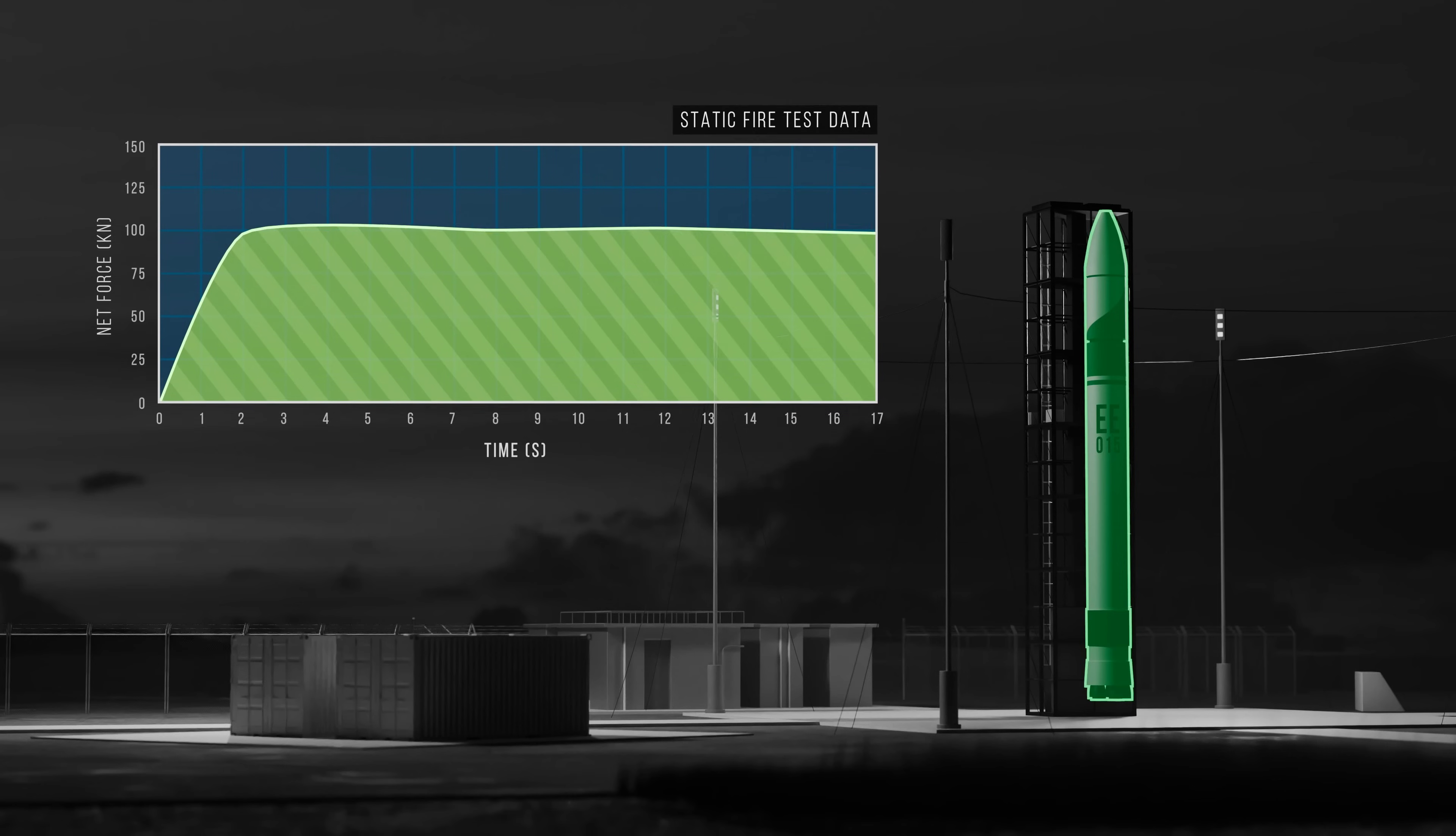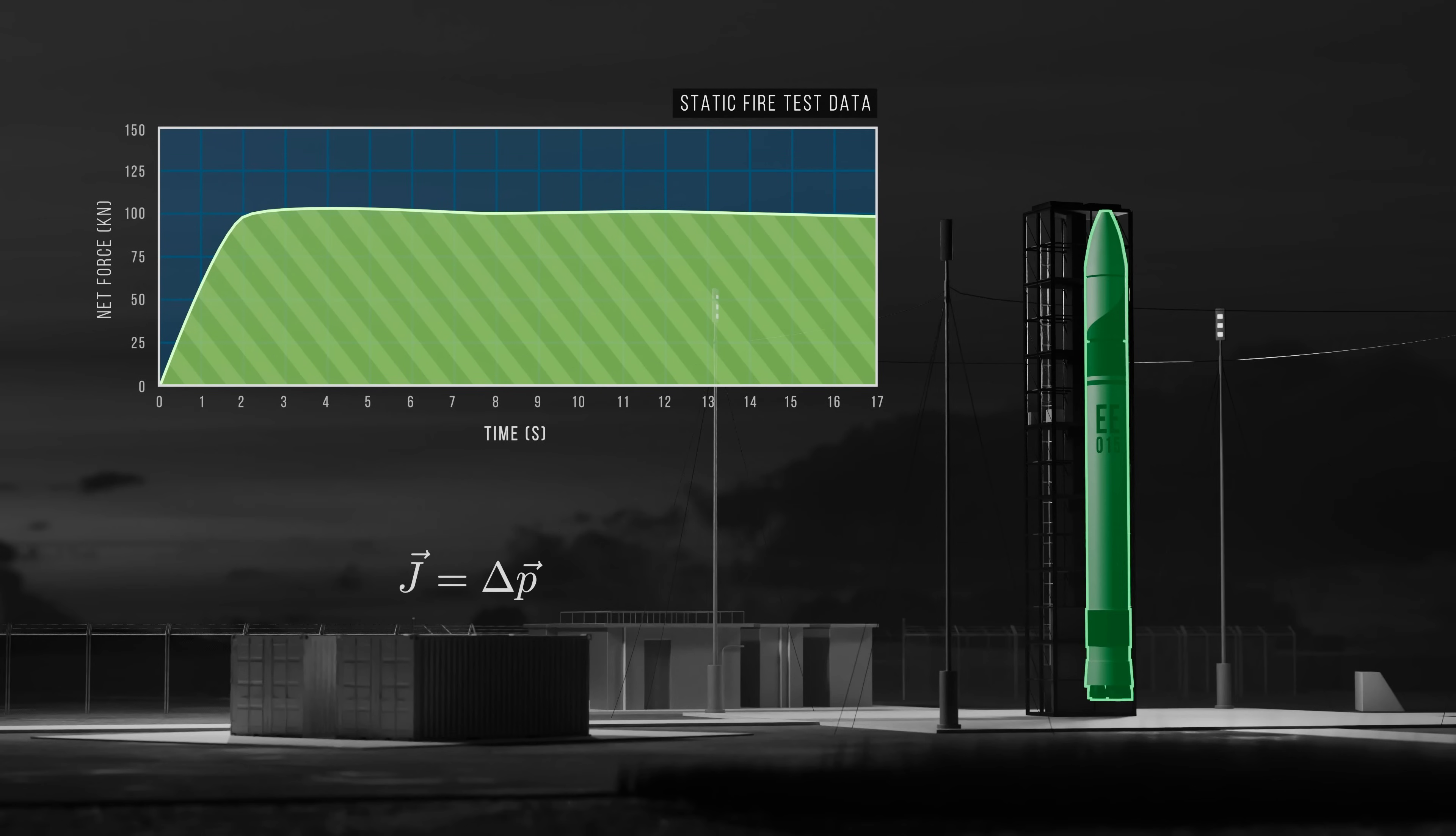Remember that impulse is equal to change in momentum. In this case, the change in momentum between the initial state, just before launch, and the final state, 10 seconds after launch. The rocket is initially stationary, with an initial momentum of 0. So the final momentum after 10 seconds will be equal to the impulse delivered over those initial 10 seconds. This impulse can easily be calculated by taking the area under the force time curve. And the rocket's velocity after 10 seconds can then be obtained by dividing the impulse by the rocket mass.